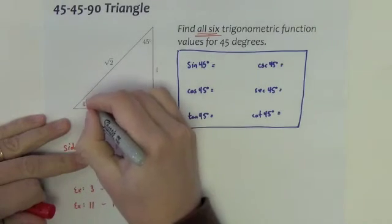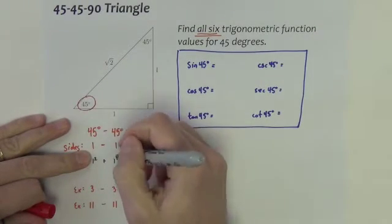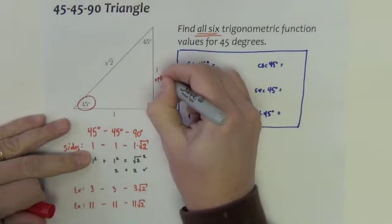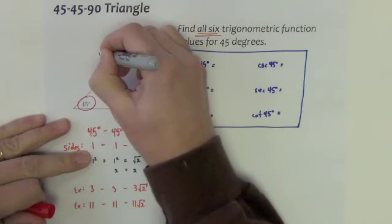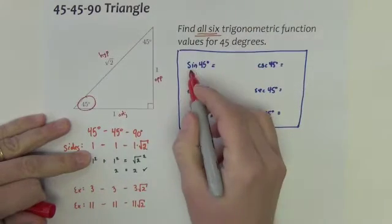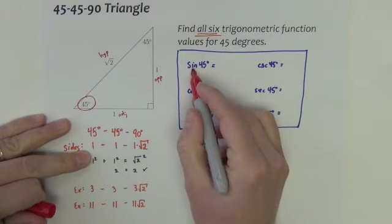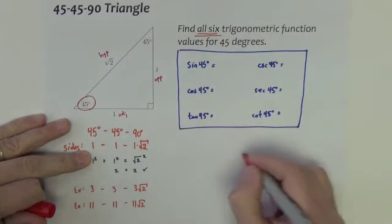Let's kind of do some scratch work down beneath here. So first of all, let's pick one of the 45-degree angles. Say we pick this one. That makes this the opposite, makes this the adjacent, this is the hypotenuse. So the sine of 45 would be the opposite.